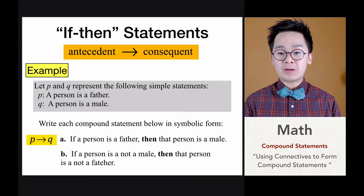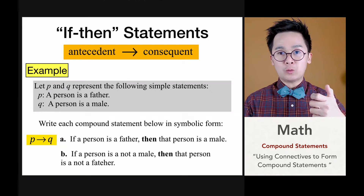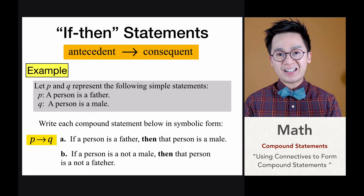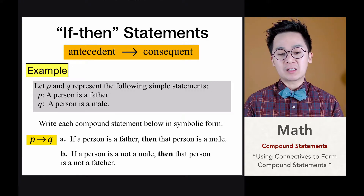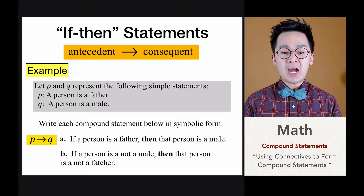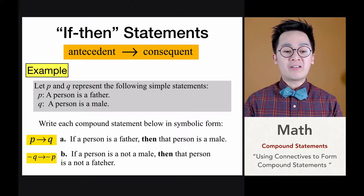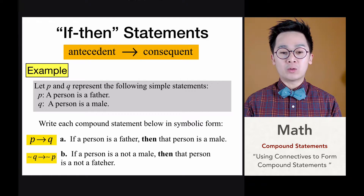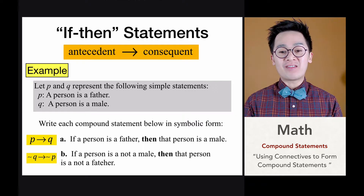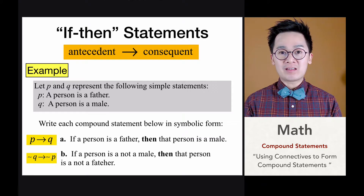For the second example, we have 'if a person is not a male, then the person is not a father.' Notice that we interchange P and Q and also use the negated versions of both statements. Transforming this into symbolic form: 'if a person is not male' is ¬Q, and 'then the person is not a father' is ¬P — giving us ¬Q → ¬P.